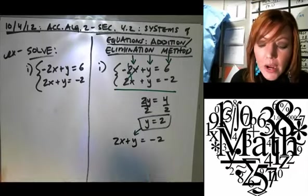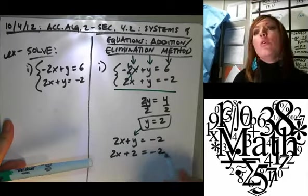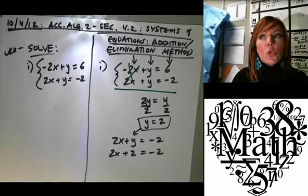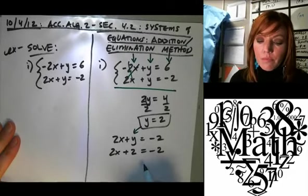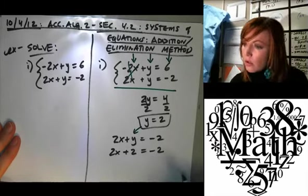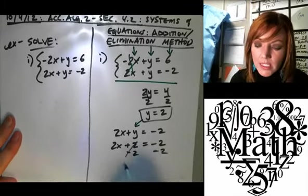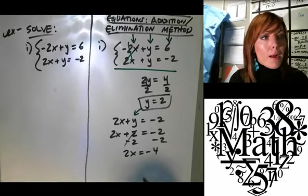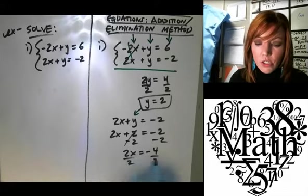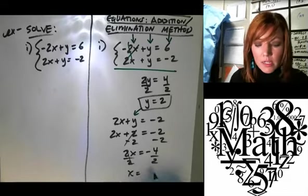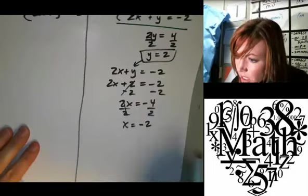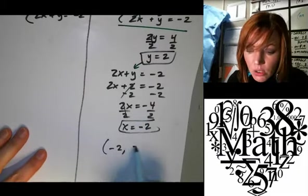Okay, so we get 2x plus 2 equals negative 2. All right, so then, who can tell me how I solve this for x? What do I do? Akashini? You subtract 2. That's good. Subtract 2. So we get 2x equals negative 4. And then the last step? Hannah? Divide by 2. So we get x equals how much? Negative 2. So at the very end, go back and put it in coordinate form. So my coordinate would be negative 2, positive 2.